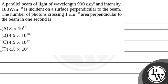Hello, let's read the question. The question says that a parallel beam of light of wavelength 900 nanometer and intensity 100 watt per meter square is incident on a surface perpendicular to the beam.